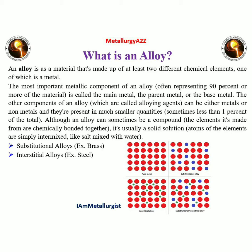Today we are going to discuss what is an alloy. An alloy is a material that is made up of at least two different chemical elements, one of which is a metal. The most important metallic component of an alloy is called the main metal, or the parent metal, or the base metal.